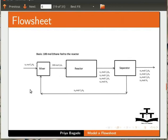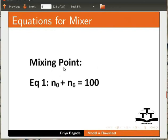Let's now model the mixer in Ascend. In the mixer, a fresh feed of ethane with n0 moles is mixed with a recycled stream of ethane with n6 moles. The outlet stream consists of 100 moles of ethane. Thus the equation for mixer is n0 plus n6 equals 100.